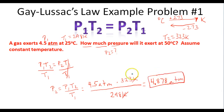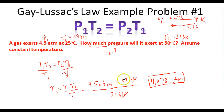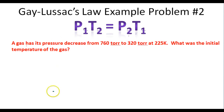Does this answer make sense? As the temperature is slightly increasing from 298 to 323 K, according to Gay-Lussac's Law, the pressure should also increase slightly. And in fact it does — it goes from 4.5 to 4.878 atmospheres.